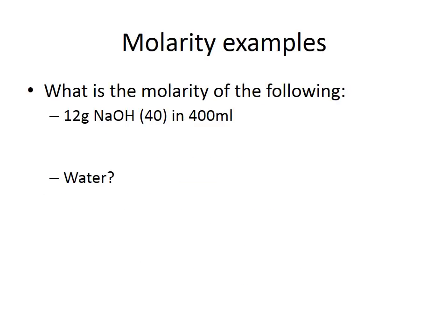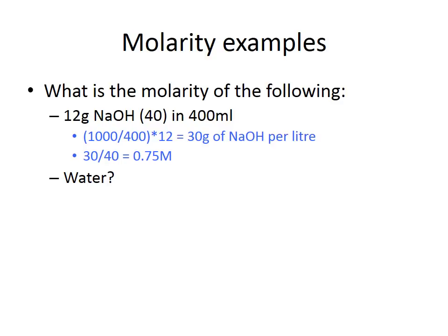Flipping that around — what if you already know how much substance you've dissolved and want to calculate the molarity? If you've dissolved 12 g of sodium hydroxide (molecular weight 40) in 400 mL of solvent, you create the ratio 1000 ÷ 400, then multiply by 12 g to find that a full litre would contain 30 g of sodium hydroxide. Dividing 30 by the molecular mass of 40 gives 0.75, so the molarity of that solution is 0.75 M.